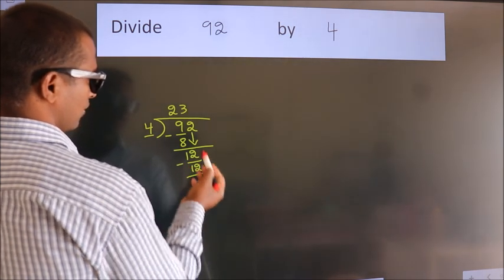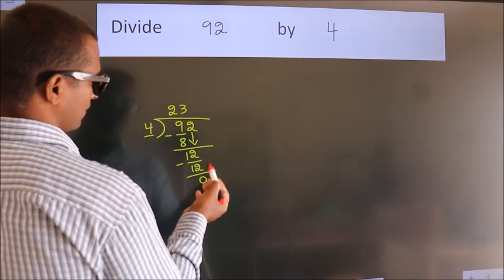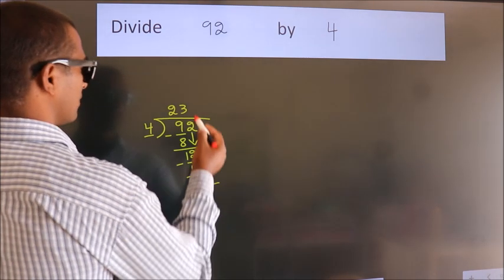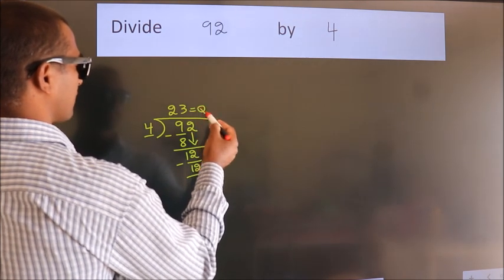After this, no more numbers to bring it down. And we got remainder 0. So, this is our quotient. Here we go. Thank you.